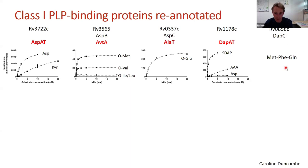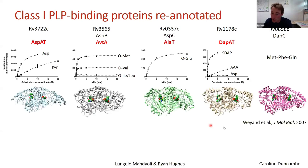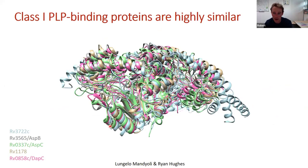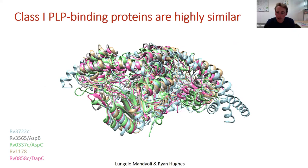We extended this to an unannotated aminotransferase and found it was a DAP (diaminopimelic acid) aminotransferase — a bacterial cell wall precursor — again surprising because MTB supposedly already had one of those, which also turned out to be misannotated. Crystal structures from a structural biology collaborator showed the overall fold is nearly identical across all these enzymes, explaining why substrate specificity is so hard to predict bioinformatically — it really comes down to the active sites.